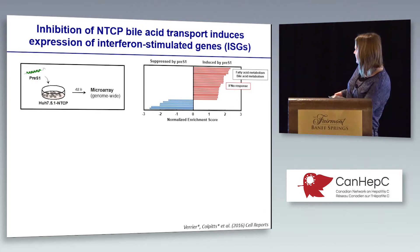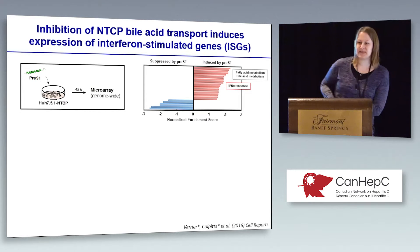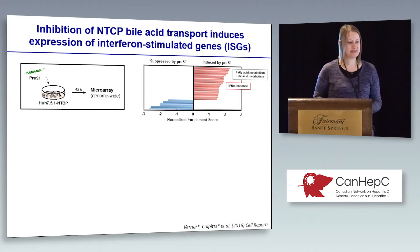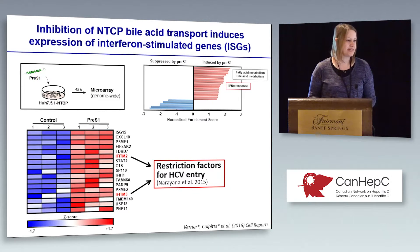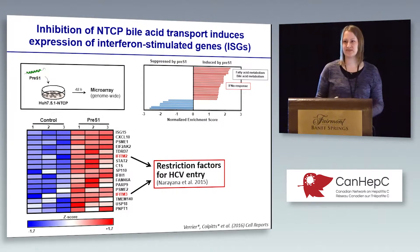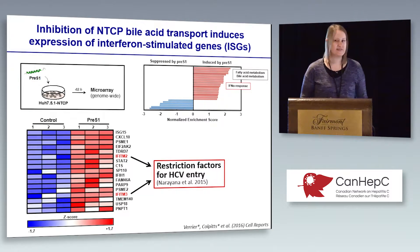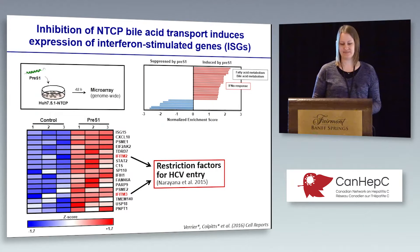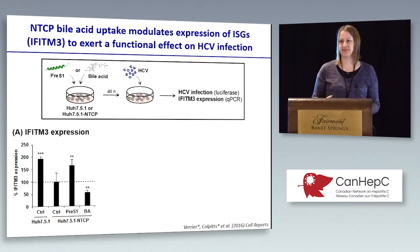Some results were not too surprising — for example, fatty acid and bile acid metabolism were induced by pre-S1. But it was surprising that the interferon alpha response was also induced by pre-S1 treatment. At the individual gene level, a number of ISGs were induced, including two that jumped out at us: IFITM2 and IFITM3, which were recently described as restriction factors for HCV entry. We selected IFITM3 as a representative ISG for further validation studies.